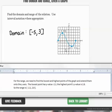For the range, we need the lowest and highest points of the graph, lowest point, highest point, and extend them onto the y-axis. The lowest point has a y value of negative 2.1. The highest point's y value is 2.8. So the range is from negative 2.1 from the bottom up to the top value of 2.8.